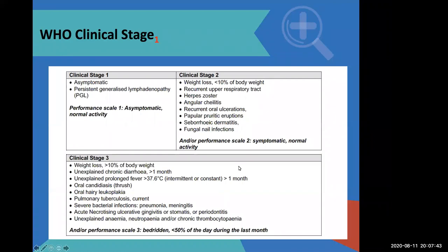If they start to become significantly immunocompromised, we talk about stage three conditions, where we have weight loss of more than 10%. The patient is very sick, losing significant weight, diarrhea for more than a month, fever for more than a month, oral candida, pulmonary TB — which is a stage three condition. Extra-pulmonary TB becomes stage four. Also unexplained anemia, severe bacterial infections, bacterial pneumonia, bacterial meningitis.